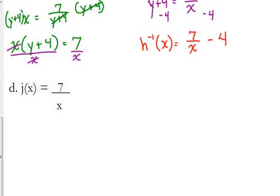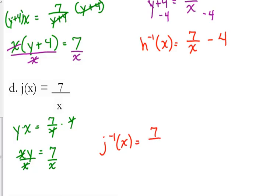Okay, one more rational here, and then we'll look at a quadratic. Okay, x is equal to 7 over y. Pretty straightforward here. Multiply both sides by y, and then divide both sides by x. So j inverse of x is equal to 7 over x.